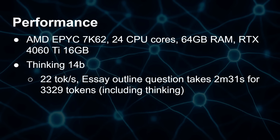If you bump up to an RTX 4060 Ti with 16 gigabytes of memory, the 14 billion parameter model runs at 22 tokens per second, giving you the Battle of the Bulge essay outline in about two to two and a half minutes — 3,329 tokens. So with a good graphics card with 16 gigs of VRAM, you can run the bigger model and get really good results.